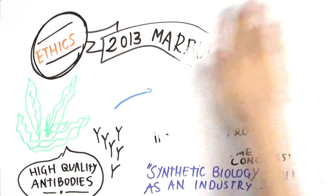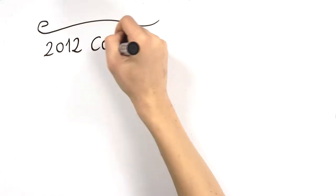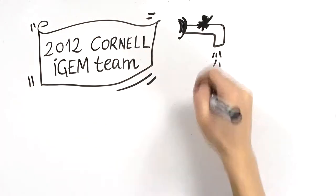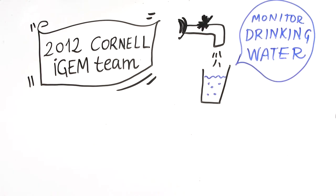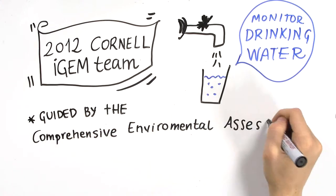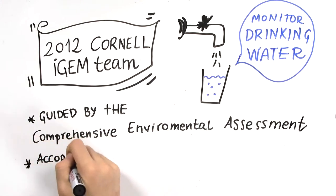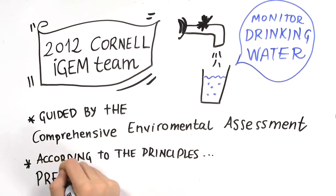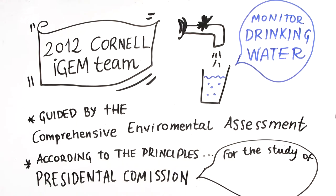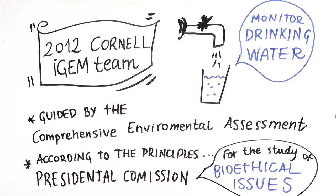Another example was with the 2012 Cornell iGEM team, whose project involved monitoring the safety of drinking water in order to improve global public health. This project was guided in part by the Comprehensive Environmental Assessment and designed in accordance with principles disclosed by the Presidential Commission for the Study of Bioethical Issues in 2010.